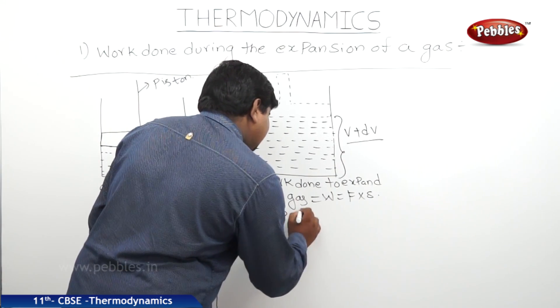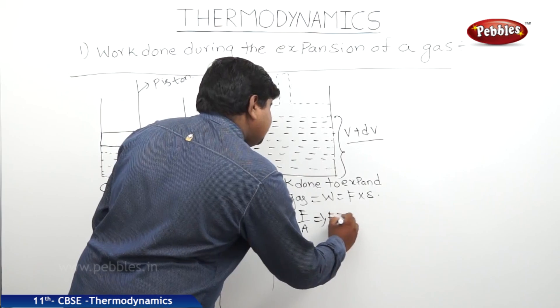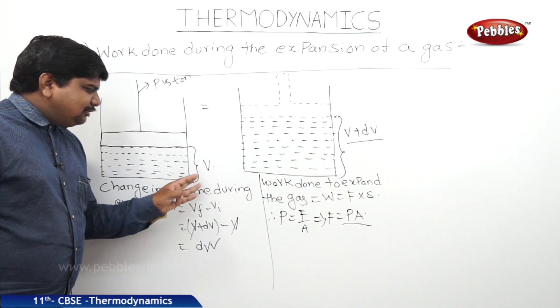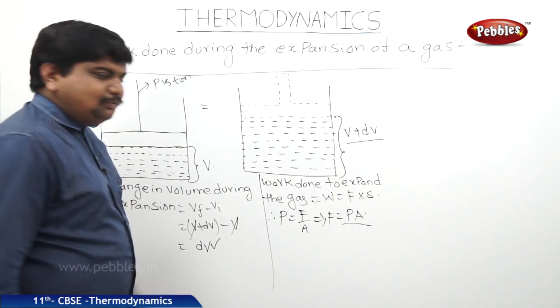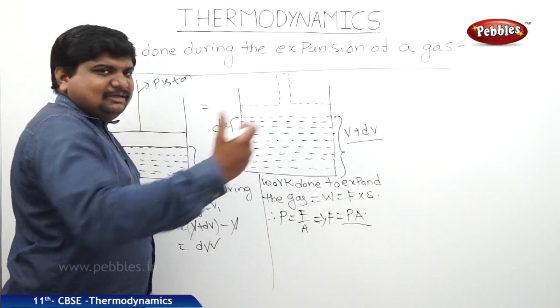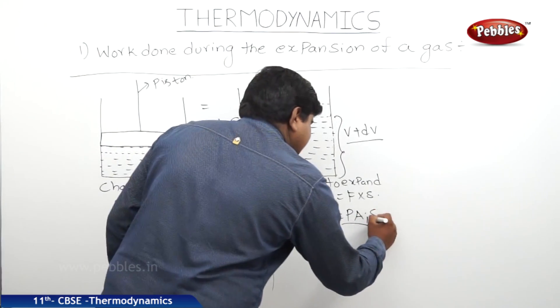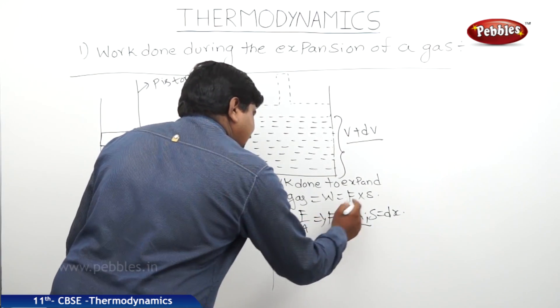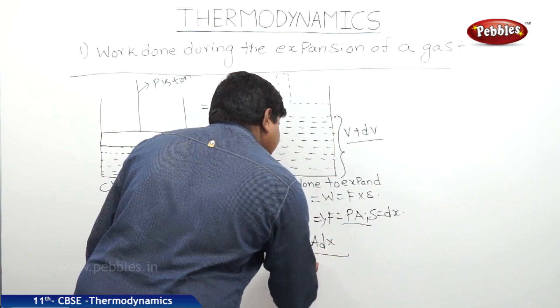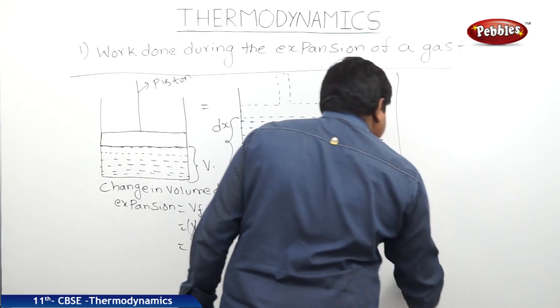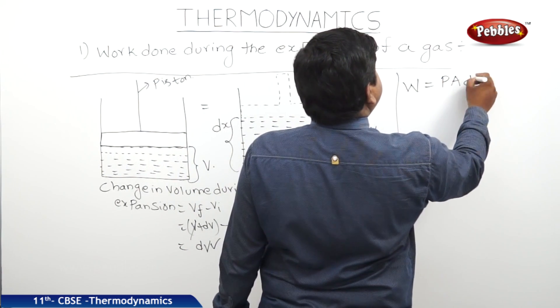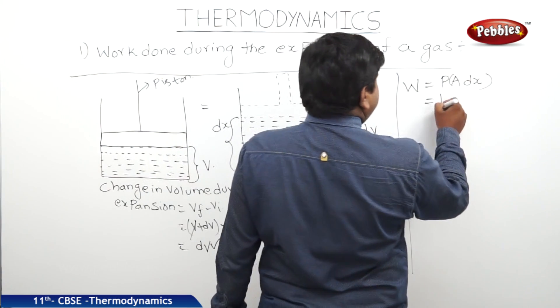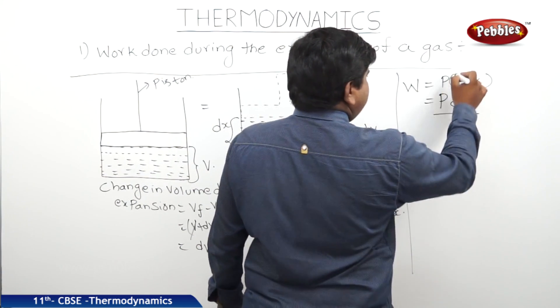We can write that pressure equals force by area. This results in force equals pressure into area. The displacement taken by the gas molecules from the first position to the initial position, let us say it is dx, a small displacement in the expansion. Therefore, S equals dx. Work done W equals F equals P into A where S equals dx. We can say W equals P into A into dx. Multiplying this area into small displacement, we can write P dV because area into displacement is volume.